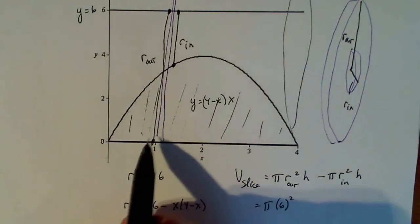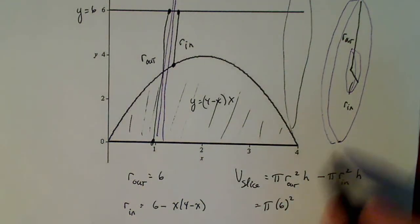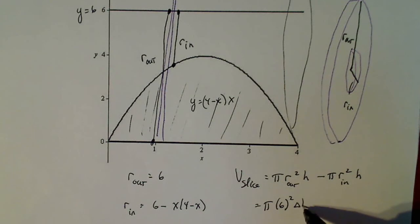If I think about how thick this is right here, it's just a small change in x. So the height of my slice is going to be a small change in x. Not h, x. Minus π. Now r_in is 6 - x(4-x), and that whole thing is squared. And the thickness is the same as it is over here, Δx.